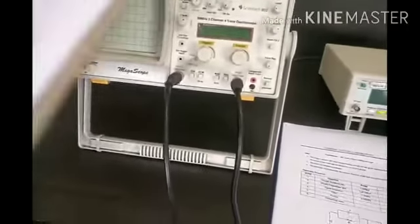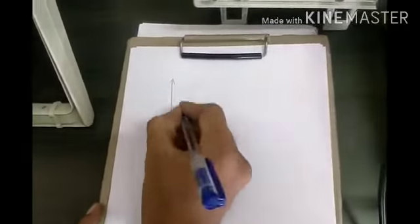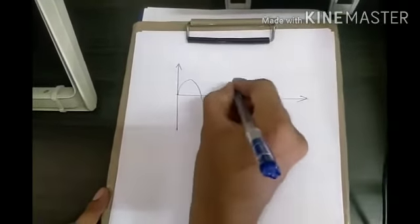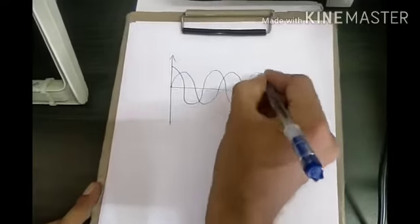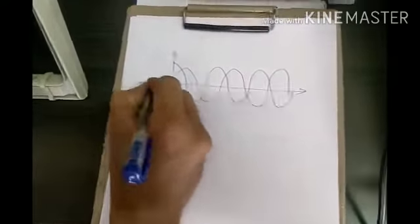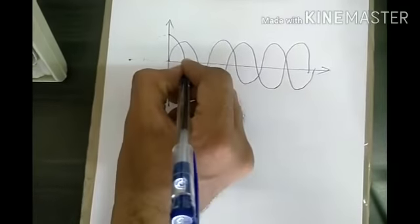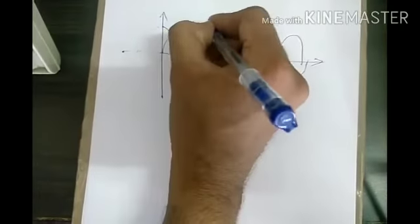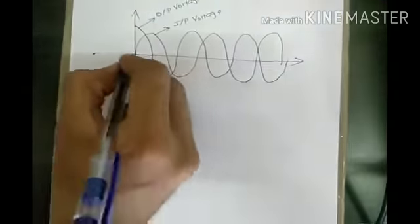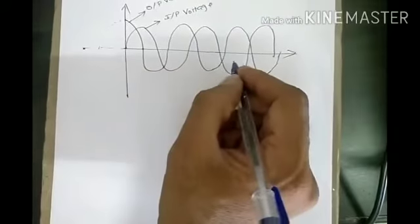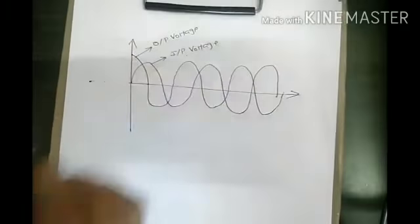For example, consider two waveforms. If this is the input voltage, and the output voltage starts from here and varies in this fashion, then with respect to the reference axis, the output voltage has already crossed zero — it is ahead of the input voltage. So we say that the output voltage leads the input voltage. This is the meaning of one waveform leading another, or one voltage leading another voltage.